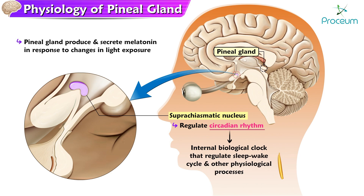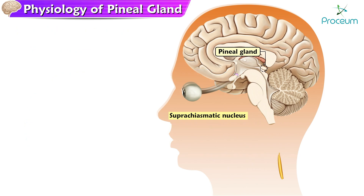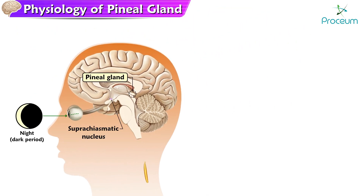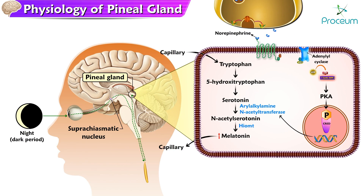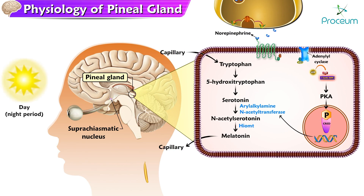The pineal gland produces and secretes melatonin in response to changes in light exposure. When light levels are low, such as during the night, the pineal gland produces more melatonin. Conversely, when light levels are high, such as during the day, the pineal gland produces less melatonin.